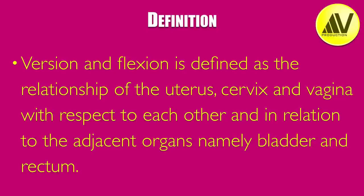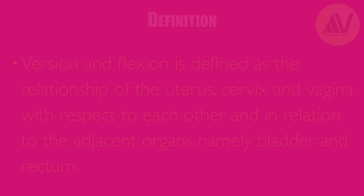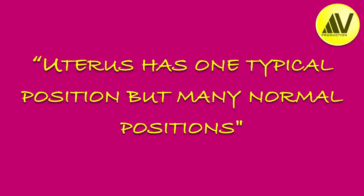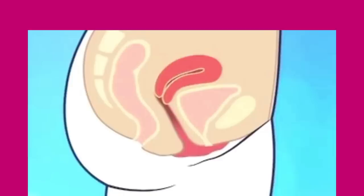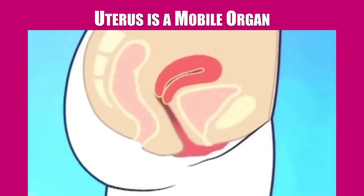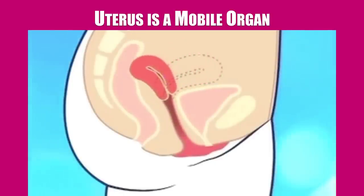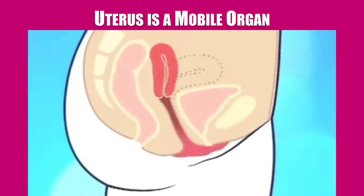This is much like the definition of attitude of the fetus in obstetrics. I will first start with a quotation: Voltaire has said that the uterus has one typical position but many normal positions. The most fundamental thing to remember is that the uterus is a mobile organ. It has many different normal positions.